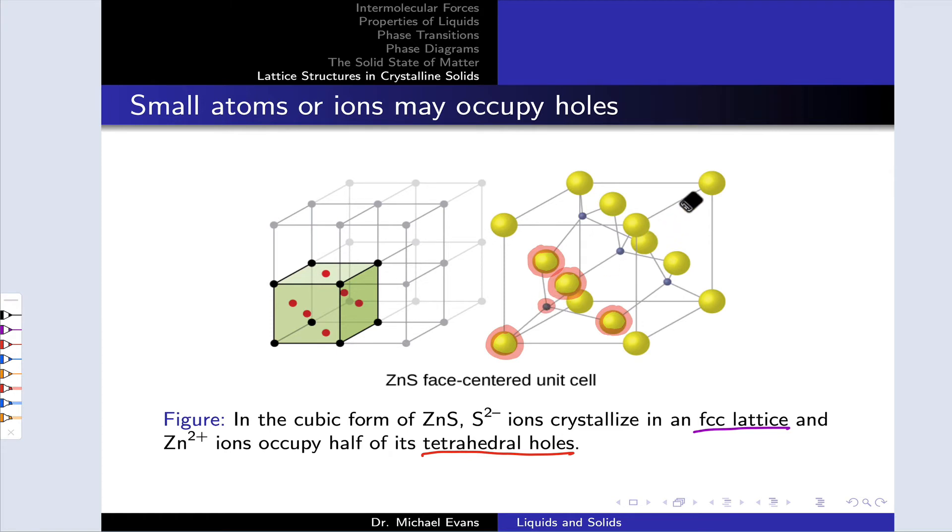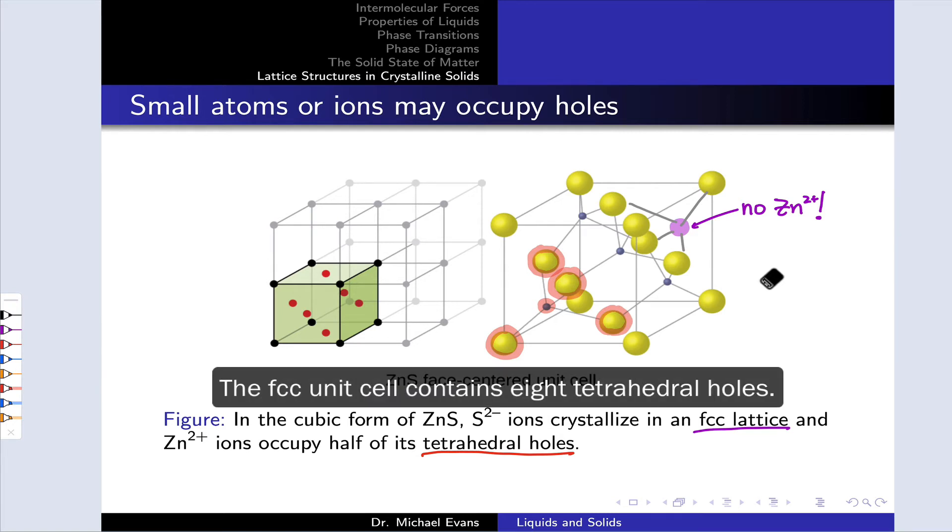Notice, however, that if we look for a corresponding zinc atom on the other side of the unit cell, somewhere around here, there's nothing there. Only half of the tetrahedral holes are filled. If you do the math of working out how many tetrahedral holes we would expect within the unit cell, you'll realize that to achieve the formula ZnS, one Zn2+ for every one S2-, only half of the tetrahedral holes can be filled with Zn2+ cations.